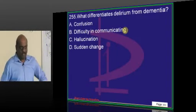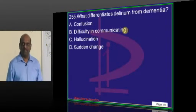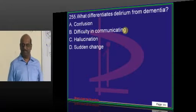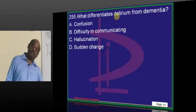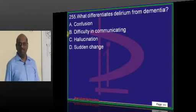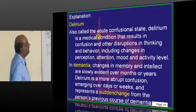Delirium is immediate — it develops suddenly. Dementia takes a long period of time to develop. That is the difference between the two.